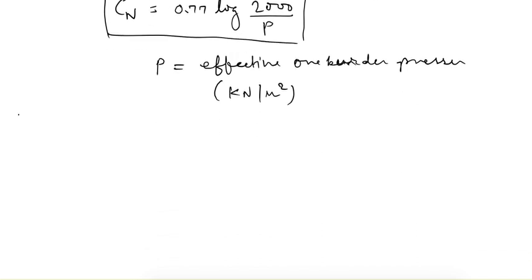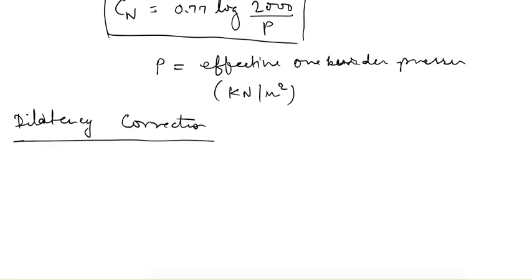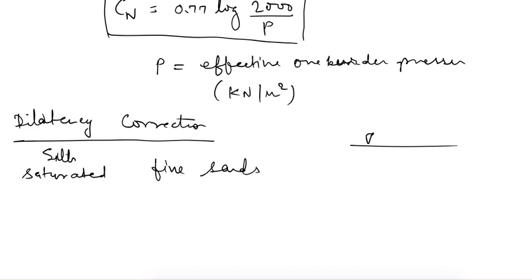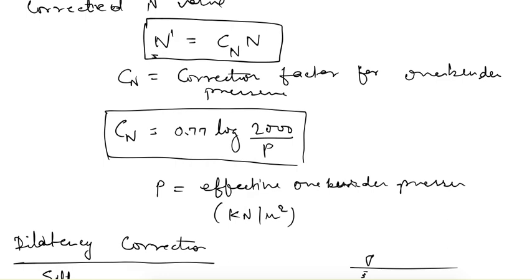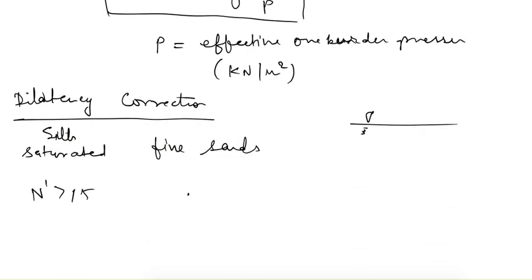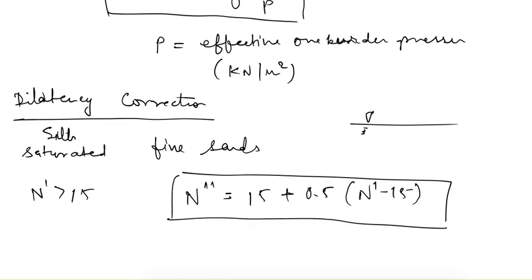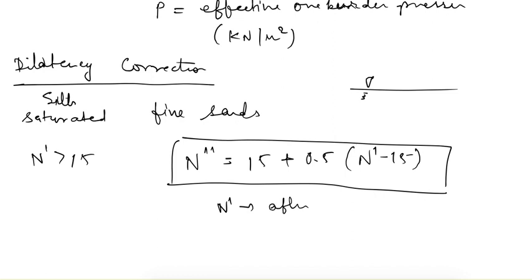The dilatancy correction is applied in the case of saturated silts or saturated fine sand — where the water table is above the test site. If the N' value after overburden correction is greater than 15, the corrected N value is given as N'' = 15 + 0.5 × (N' − 15), where N' is the N value after overburden correction.